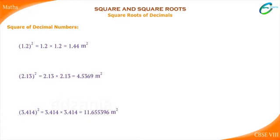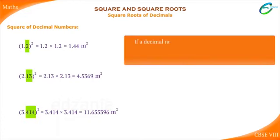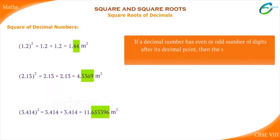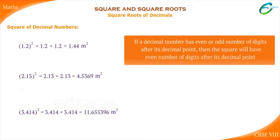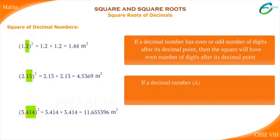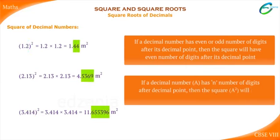So what do you understand from this? If a decimal number has even or odd number of digits after its decimal point, then the square will have an even number of digits after its decimal point. If a decimal number A has n number of digits after the decimal point, then the square A² will have 2n digits after its decimal point.